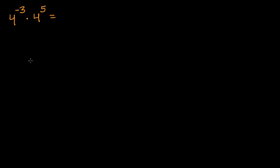Well, there's a couple of ways to do this. You could say, oh look, I'm multiplying two things that have the same base, so this is going to be that base, four, and then I add the exponents. It's four to the negative three plus five power, which is equal to four to the second power. And that's just a straightforward exponent property.